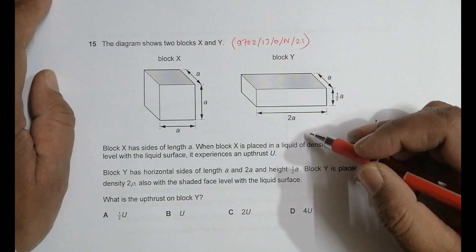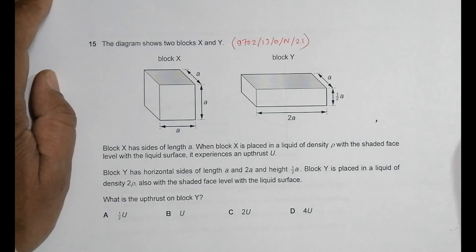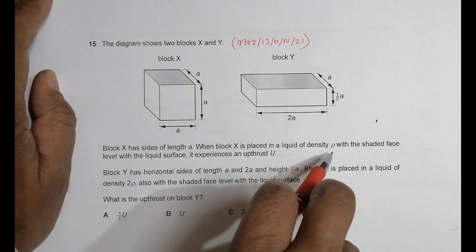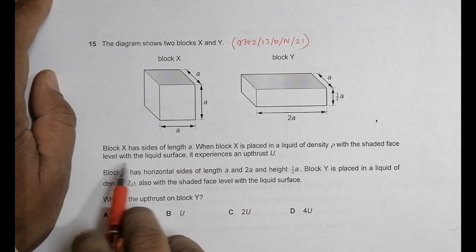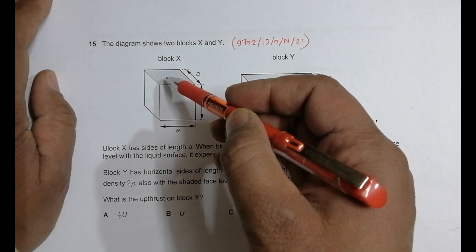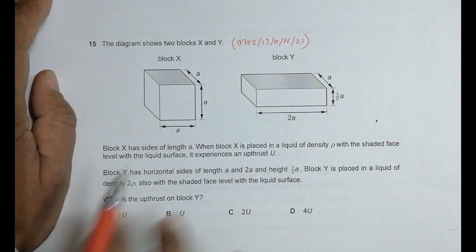The diagram shows two blocks X and Y. Block X has sides of length a, all of them, so it is cubical. When block X is placed in a liquid of density ρ with the shaded face level with the liquid surface, it means it just drowns at the surface.